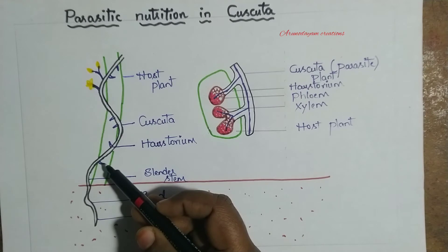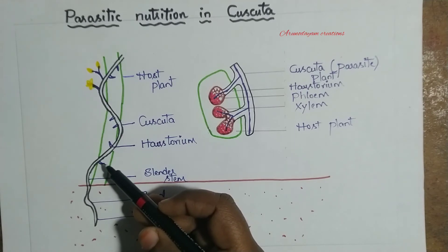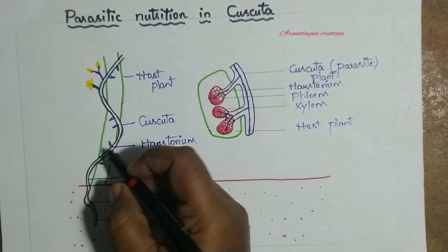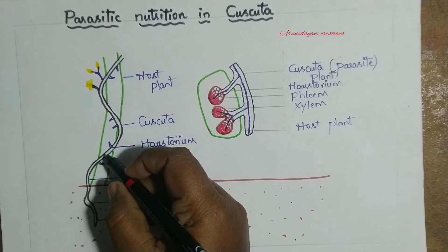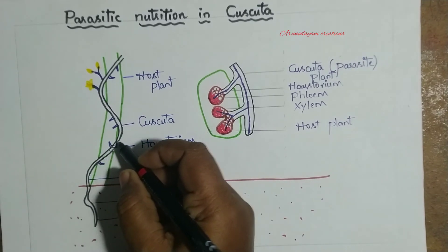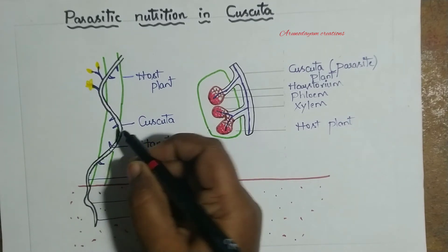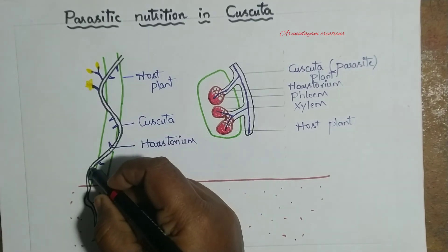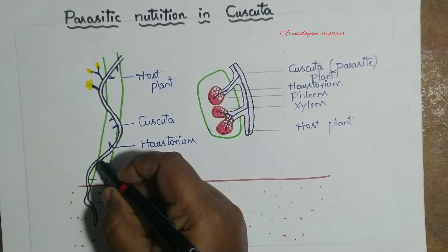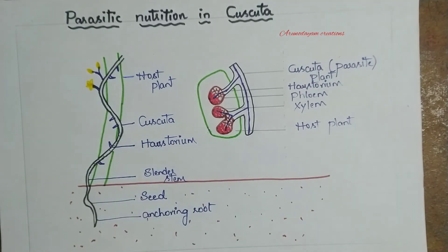The stem is a colour other than green. The leaves are reduced to hair-like structures. Cuscuta also produces flowers.